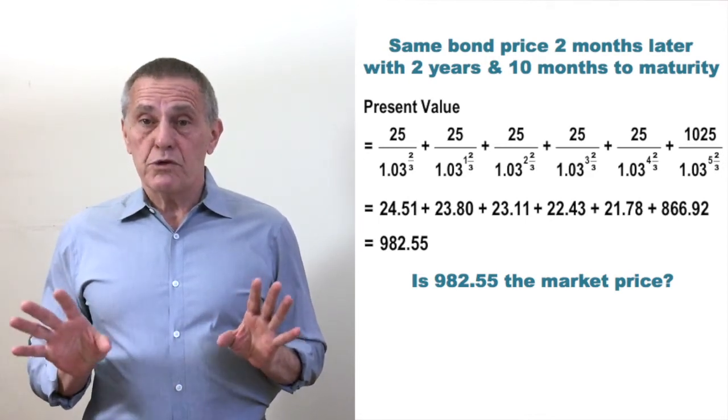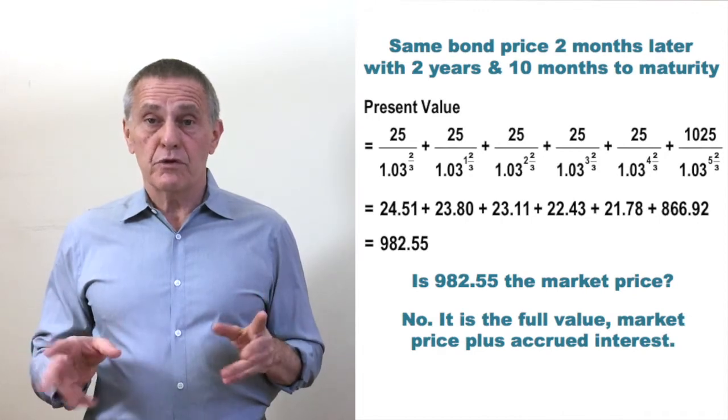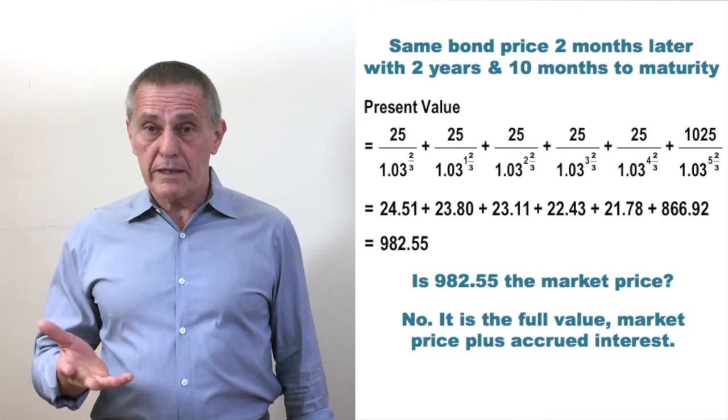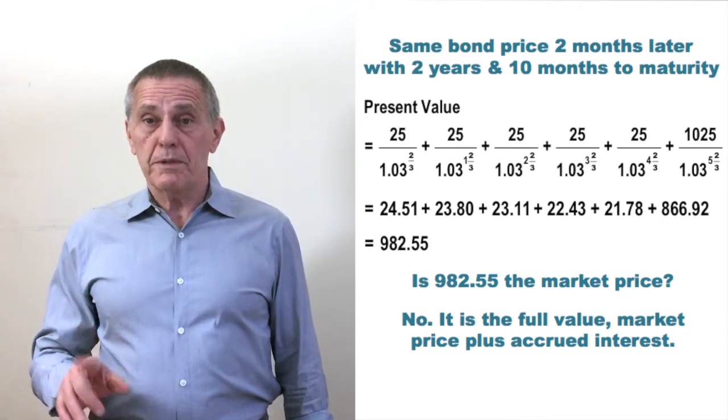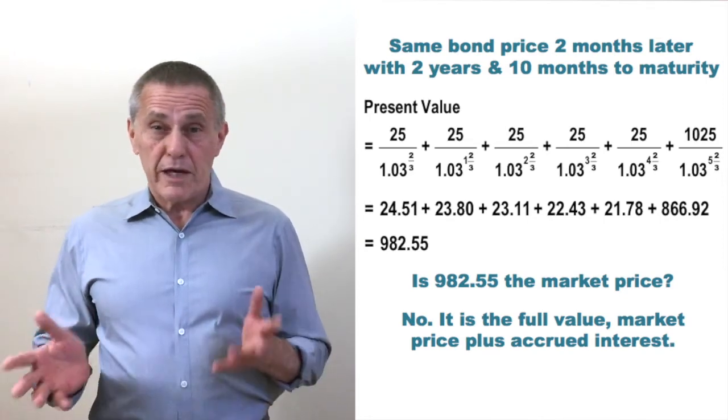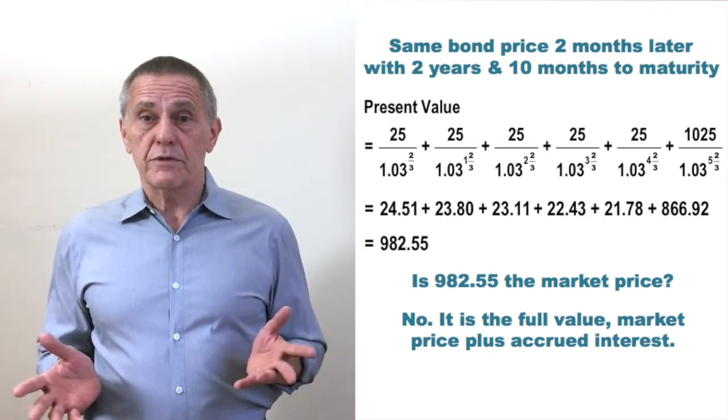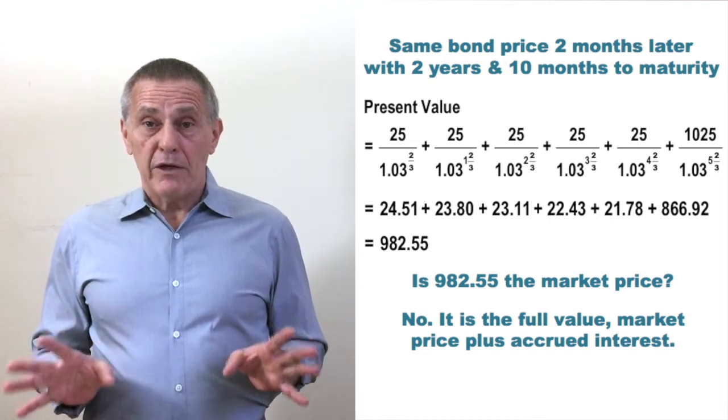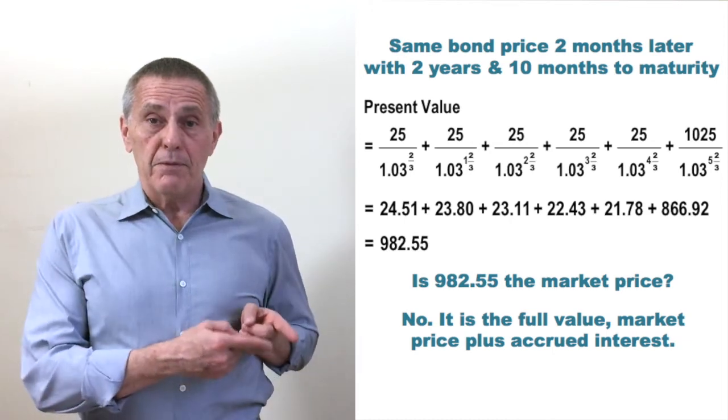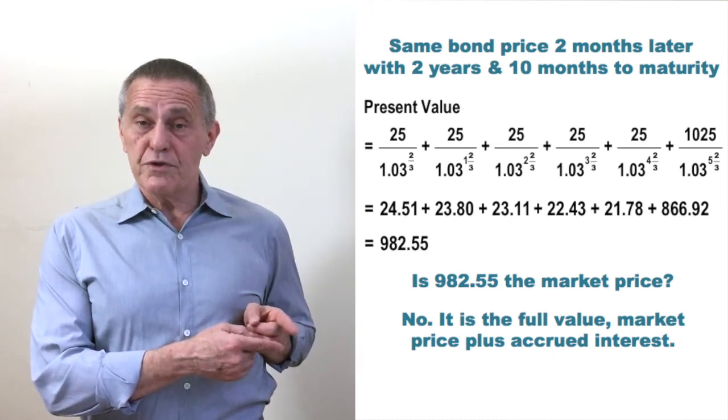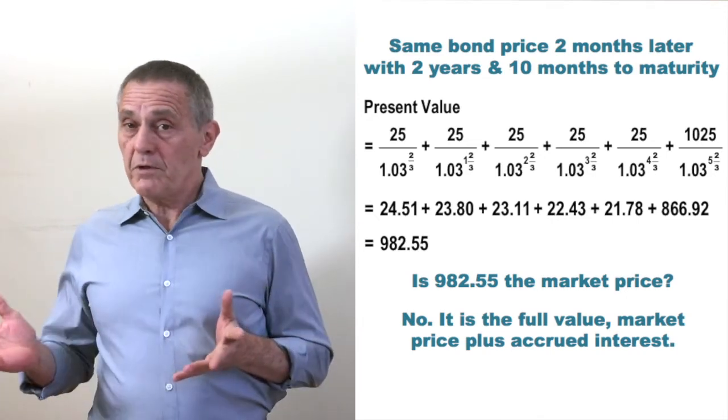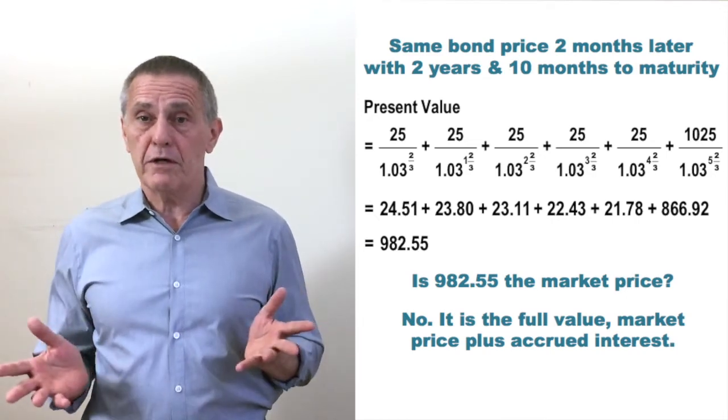Well not as most people in the fixed income markets would interpret the word price, because as referenced earlier, price, when used by itself, is normally understood to mean flat price or clean price or market price. That is the price without any adjustment for accrued interest. And also as indicated earlier, when a bond trade settles between coupon payment dates, the present value of all the cash flows includes the accrued interest, the portion of the next due coupon that's been earned from the last coupon payment date up until the settlement date of the trade.